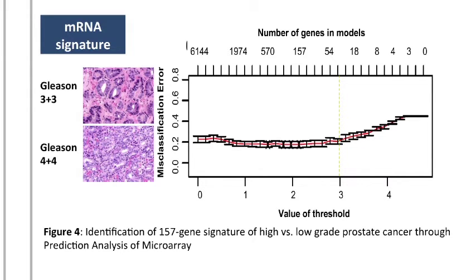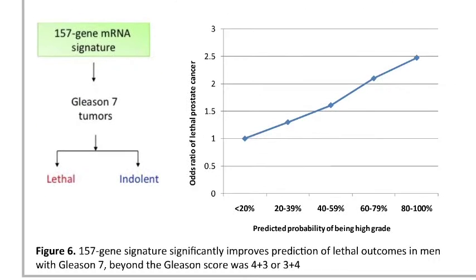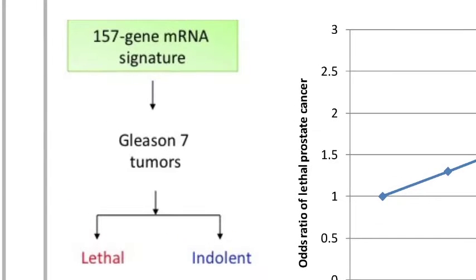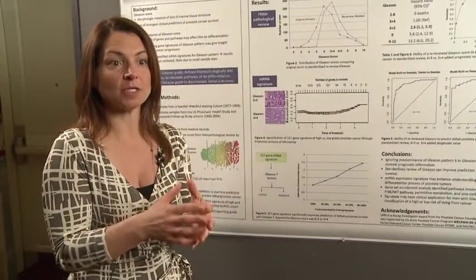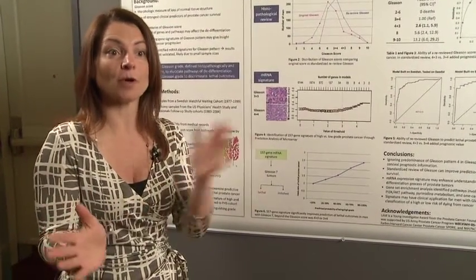What we did was then to take these 157 genes and then apply that to the men with the Gleason 7 tumors. Probably the majority of men with prostate cancer have a Gleason 7 cancer, and that's where we need the most information to predict whether they're going to have a good or a bad outcome.